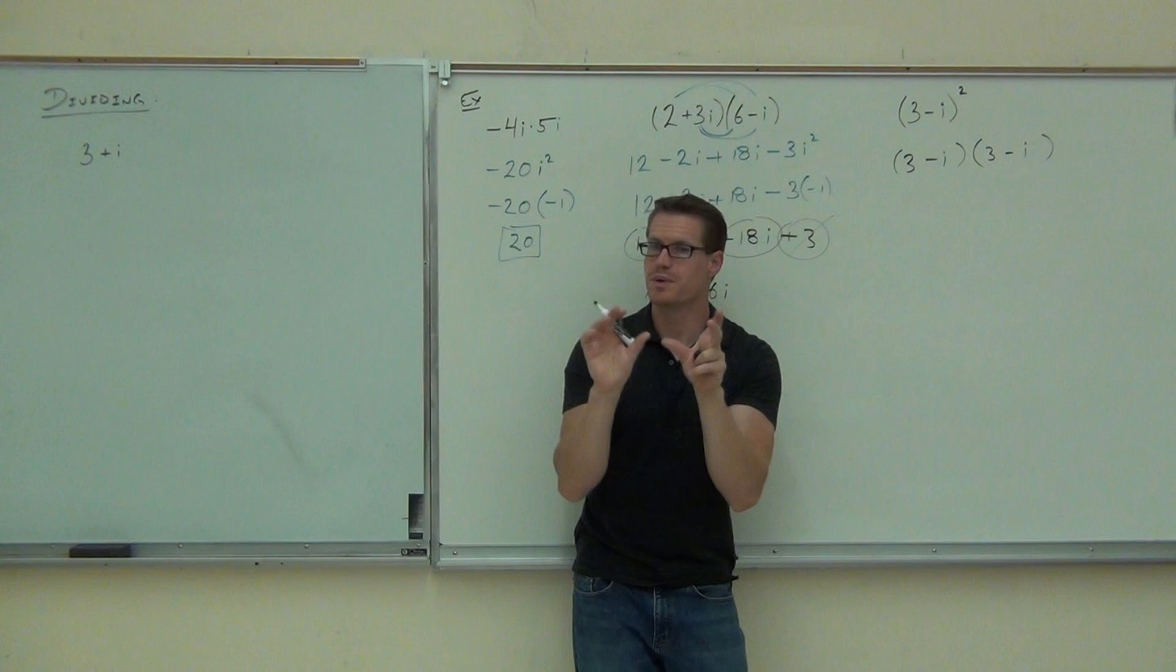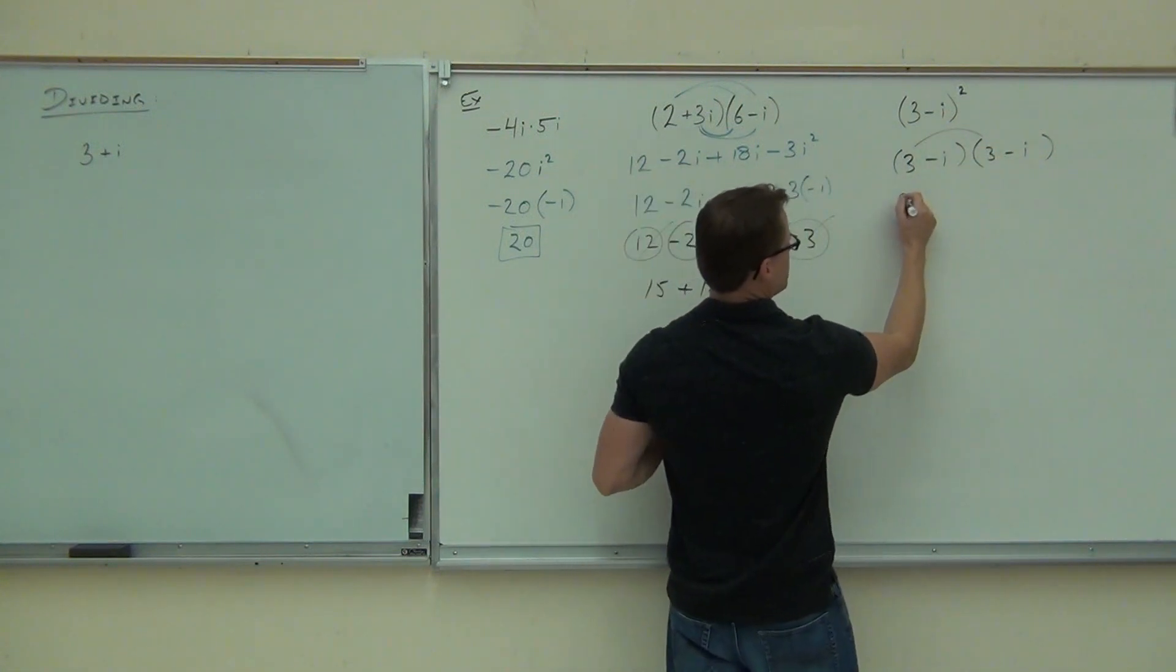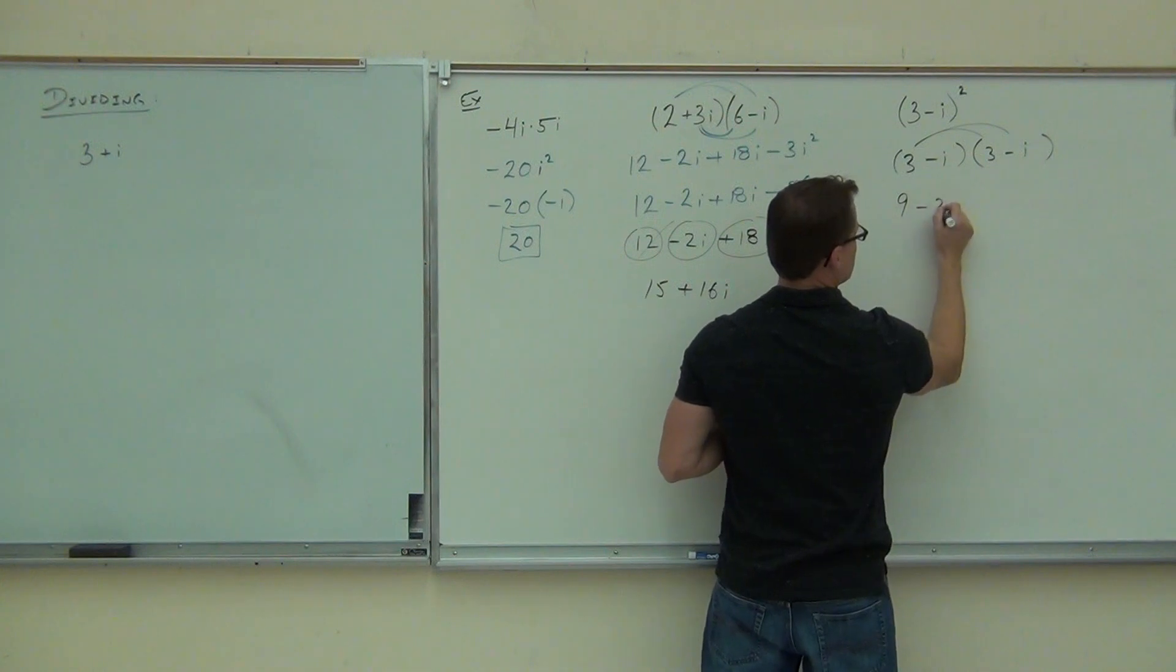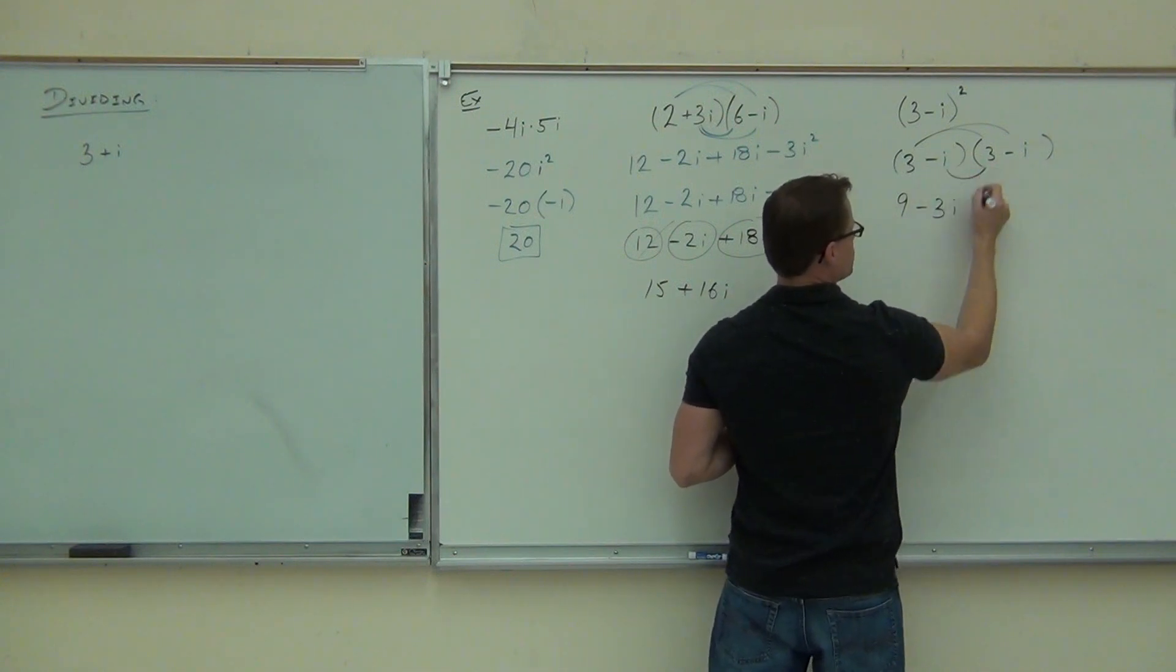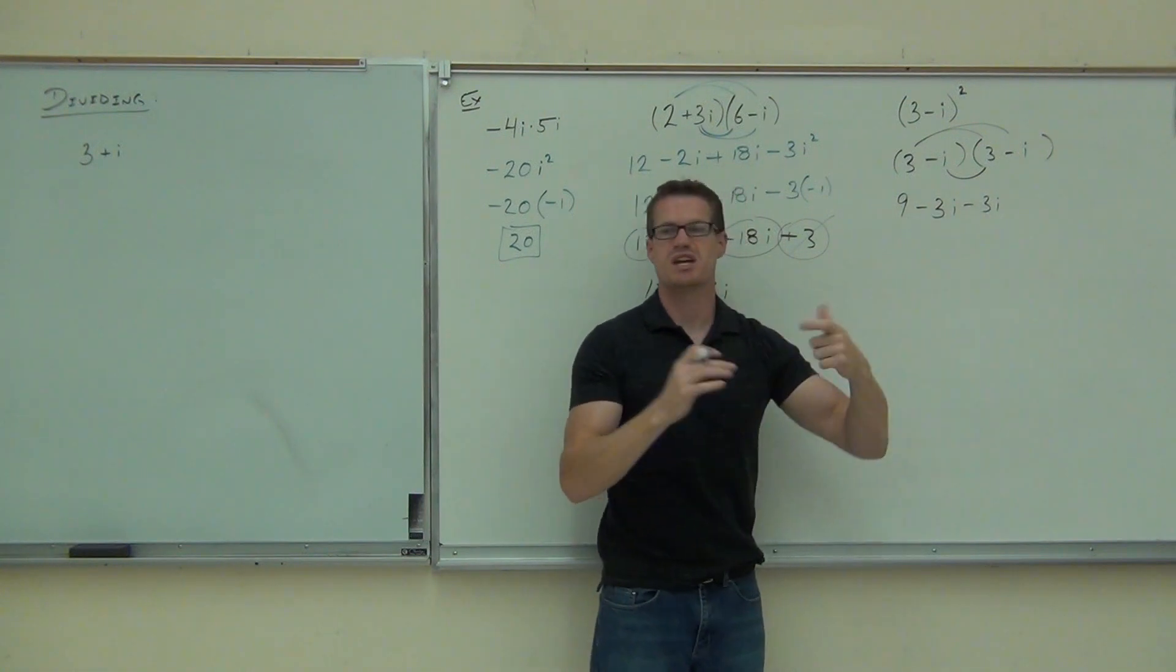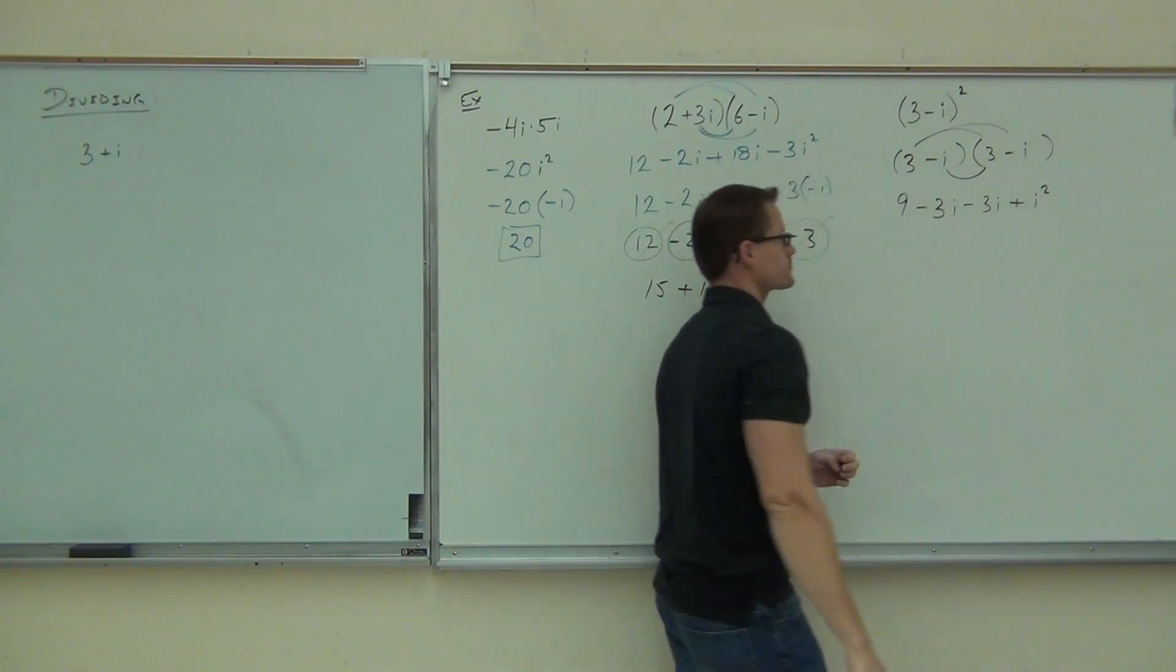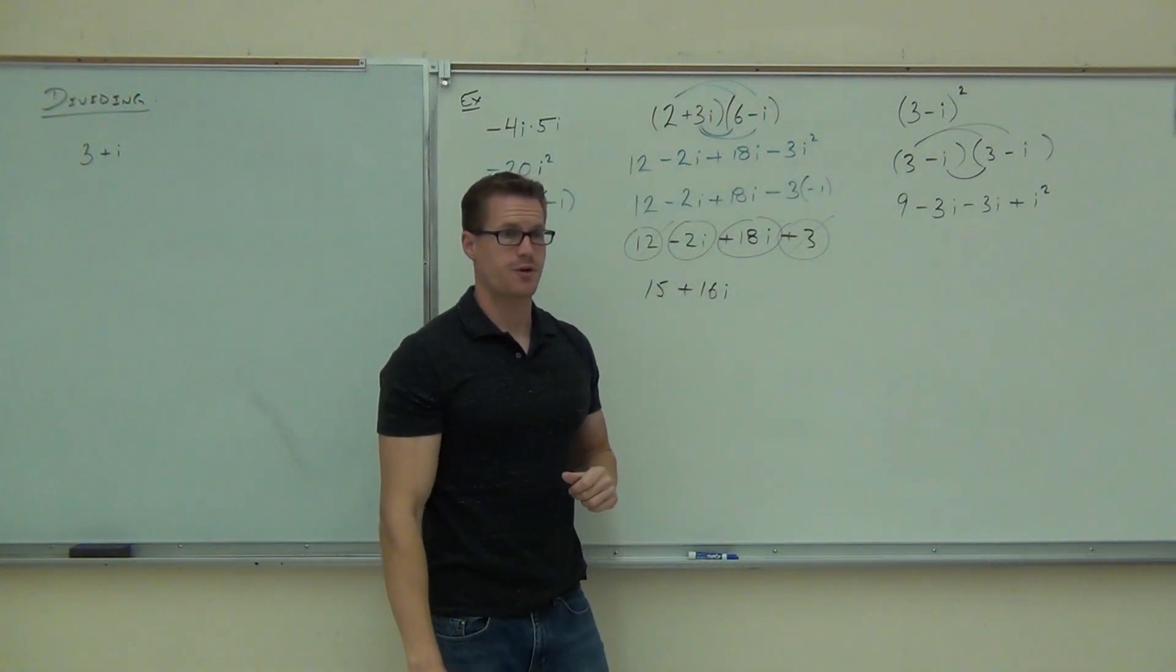So when we do distribute this, very similar to the last problem, we get 9 minus 3i, but minus 3i again. That's why we're not going to cross those middle terms out. It's because we have the same sign. And finally, plus i squared. So far so good?